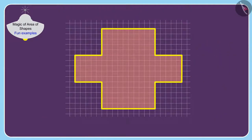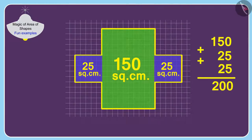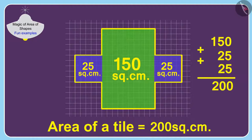To find the area of this tile, we can divide this shape into squares and rectangles in this way. In this way, the area of this tile is 200 square centimeters.